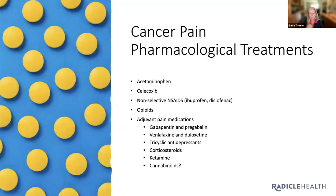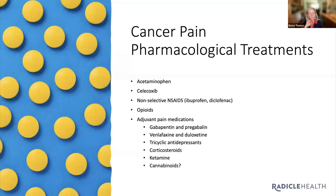What does the cancer industry recommend for pharmacological treatments for cancer pain? As you can imagine, it's things like acetaminophen, celecoxib, non-steroidal anti-inflammatories like ibuprofen, opioids, and other adjuvant pain medications. And you can see on this list, as you get to the bottom, ketamine is actually listed — but cannabinoids are not. So why is that?